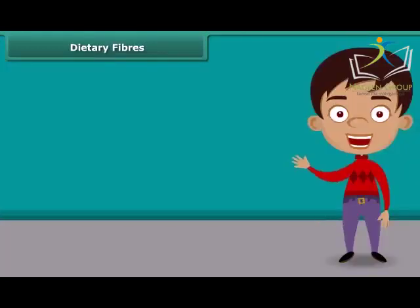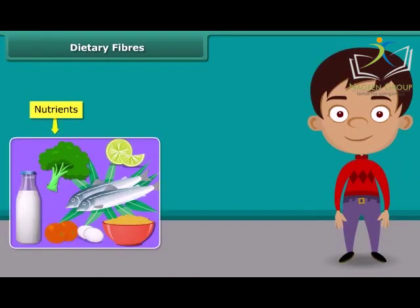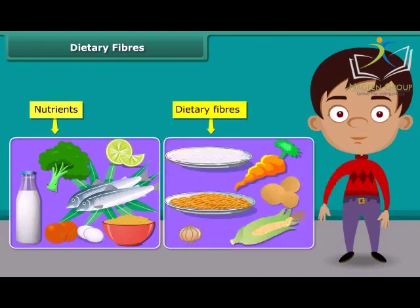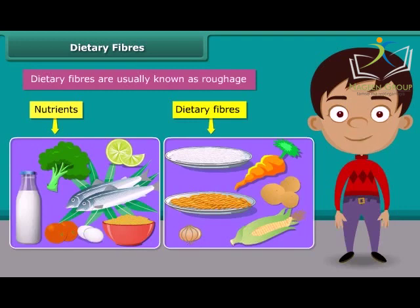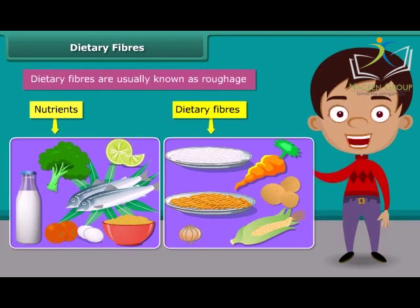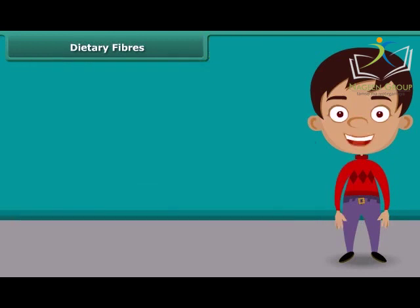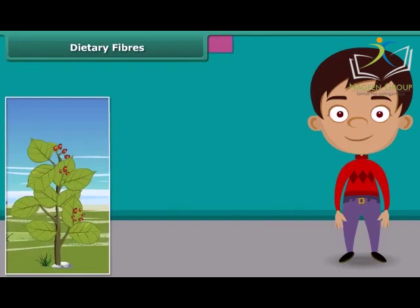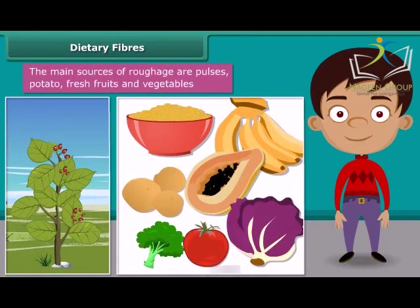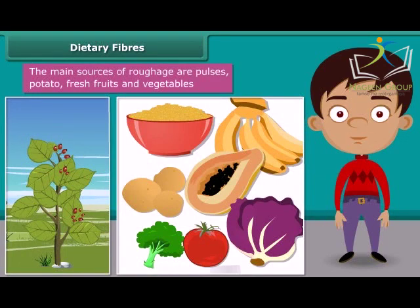Besides nutrients, dietary fiber also plays an important role in our body. They are usually known as roughage. Roughage does not provide any nutrition to our body but adds bulk. They are found only in plants — pulses, potato, fresh fruits and vegetables are the main sources of roughage. This helps our body to get rid of the undigested food.